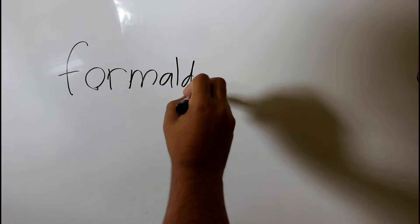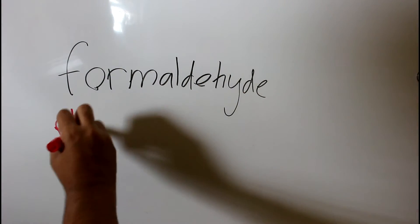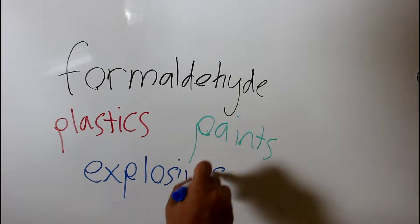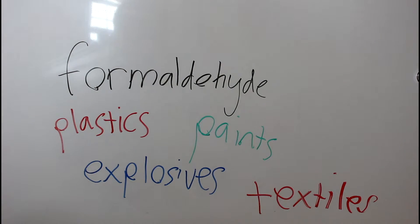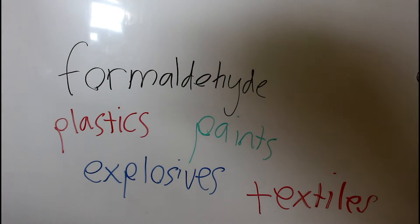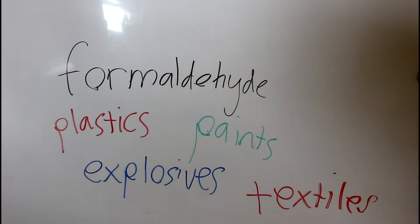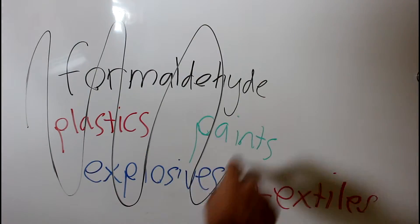Methanol is converted into formaldehyde, then diversified into products such as plastics, paints, explosives, and textiles. Methanol is used in certain internal combustion engines because it doesn't create thick, opaque smoke.